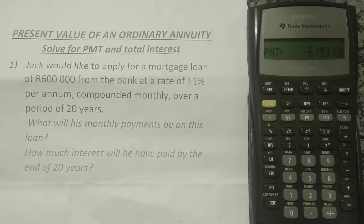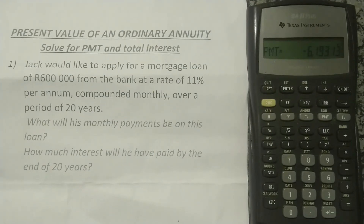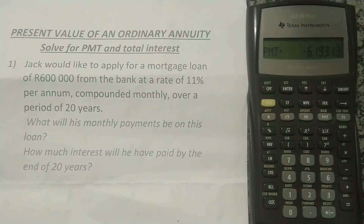The second question is: how much interest will Jack have paid by the end of 20 years? If he's paying this mortgage back every month for 20 years, how much total interest will that amount to? Let me clear the screen with CE/C.